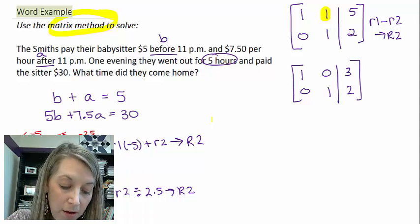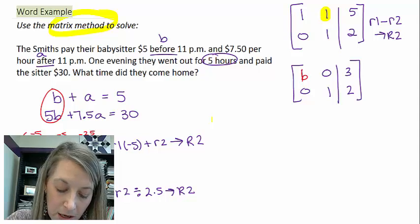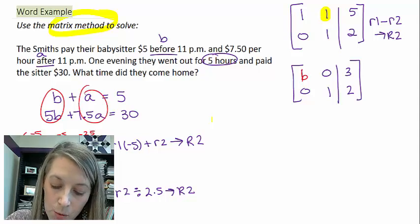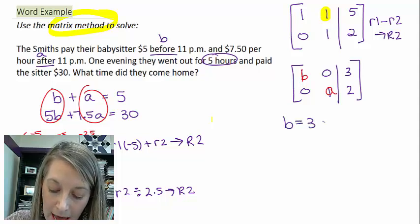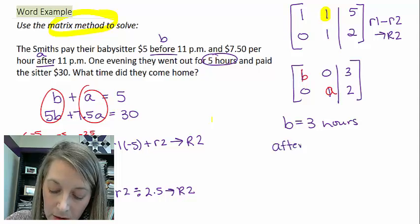So remember my variables in my first column were B. So this stands for B. My variable in my second columns were A. So this stands for A. So before 11 p.m. is 3 hours. And after 11 p.m. is 2 hours.